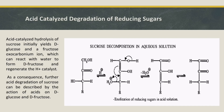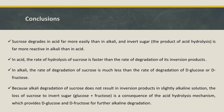Acid-catalyzed hydrolysis of sucrose initially yields D-glucose and a fructose oxocarbonium ion, which can react with water to form D-fructose and regenerate the H⁺ catalyst. As a consequence, further acid degradation of sucrose can be described by the action of acids on D-glucose and D-fructose.